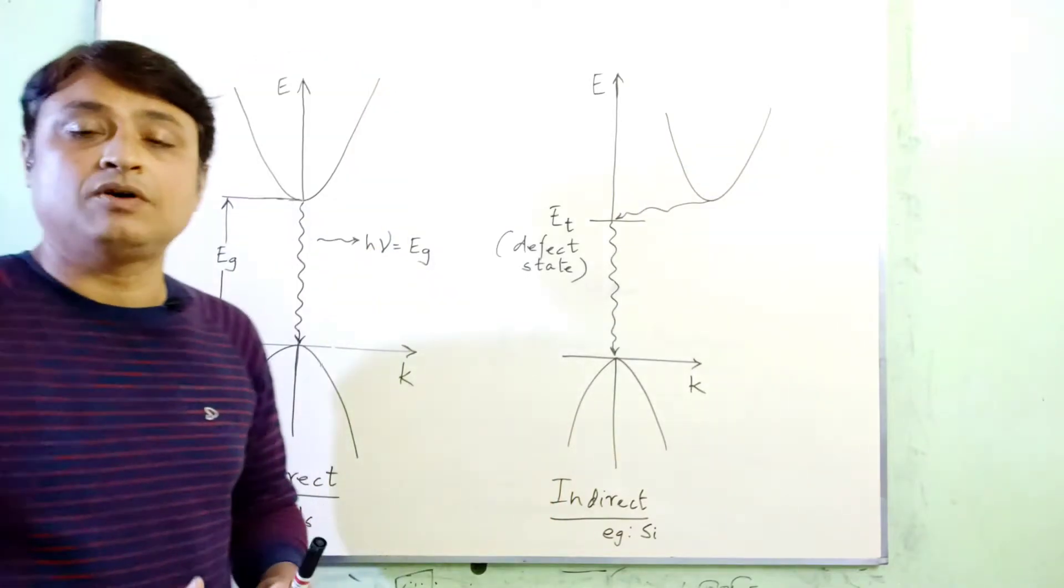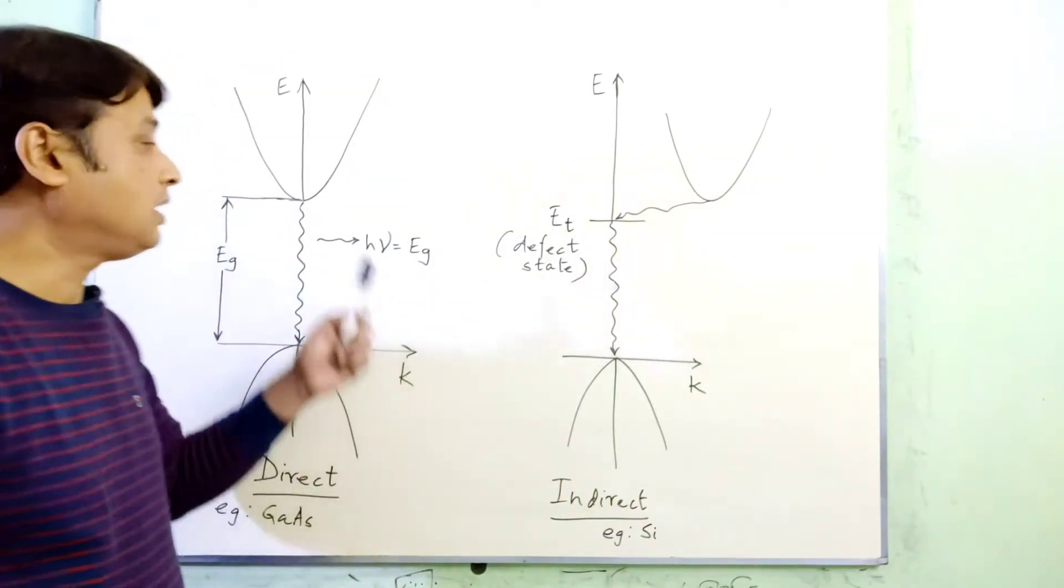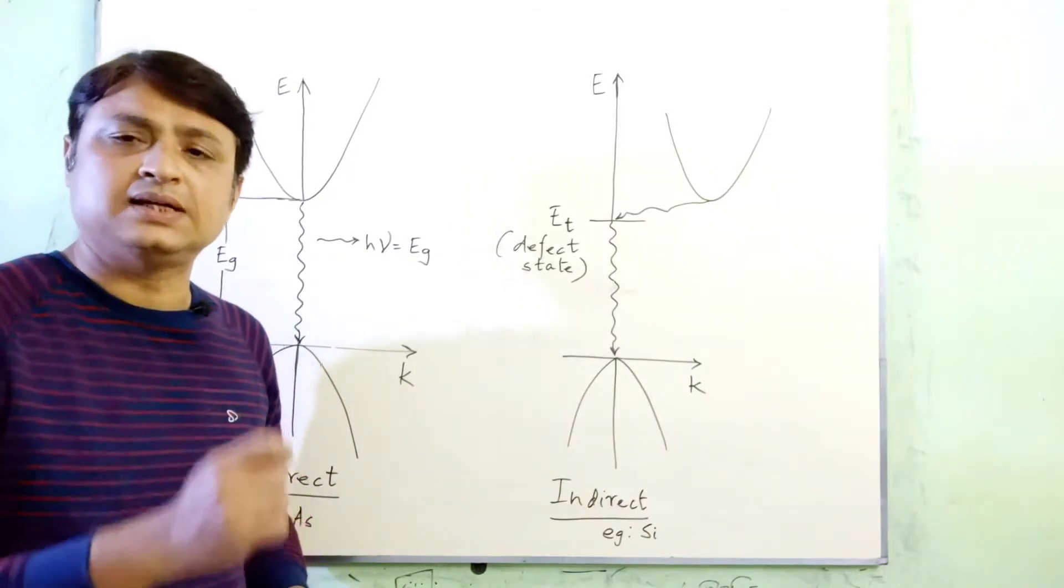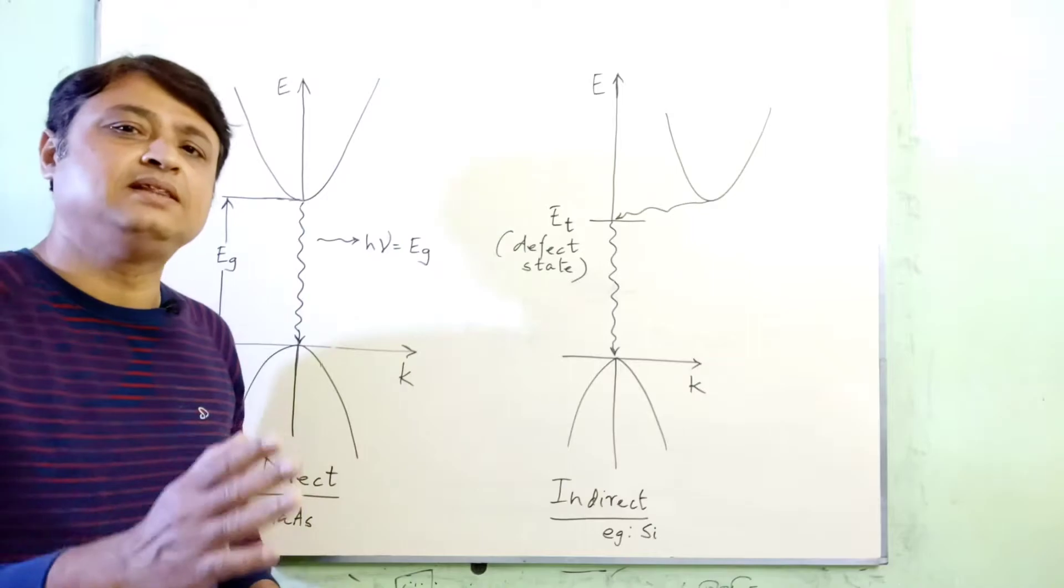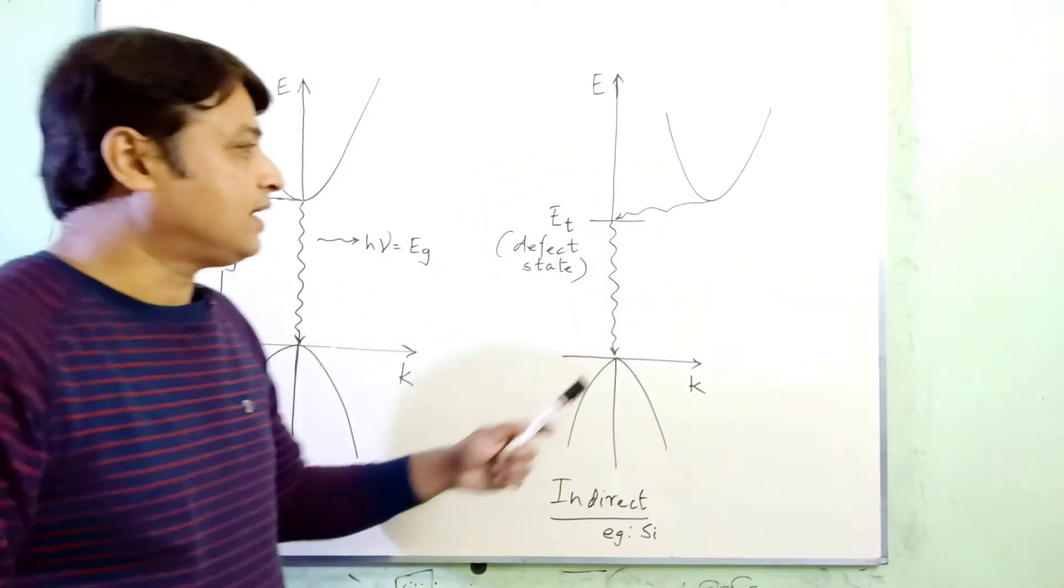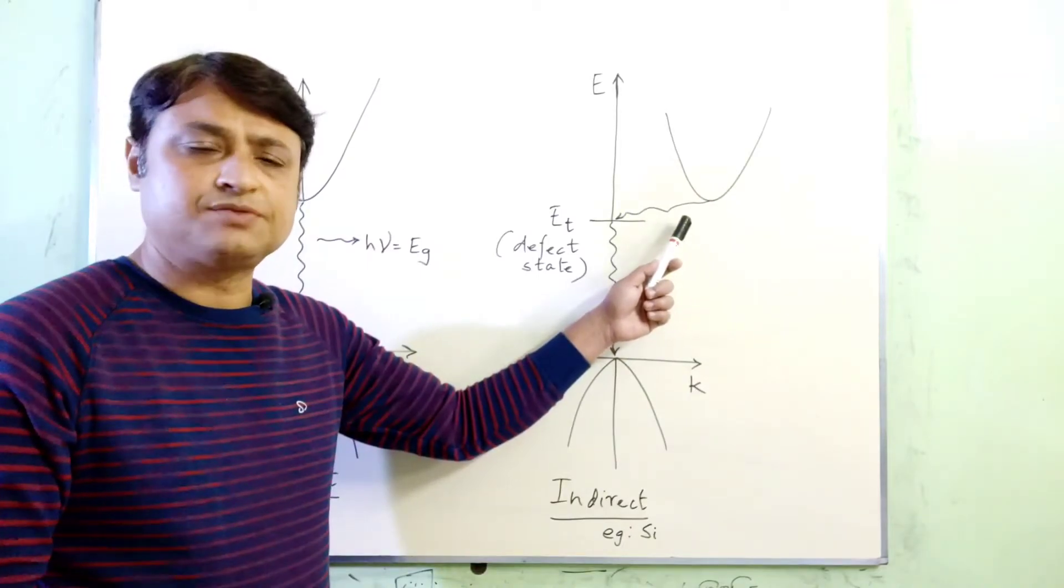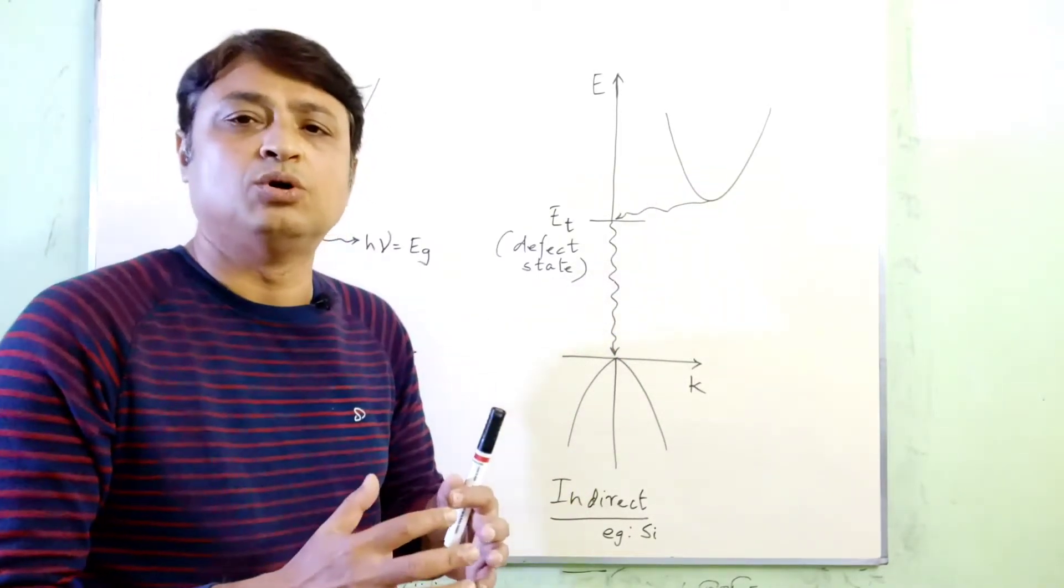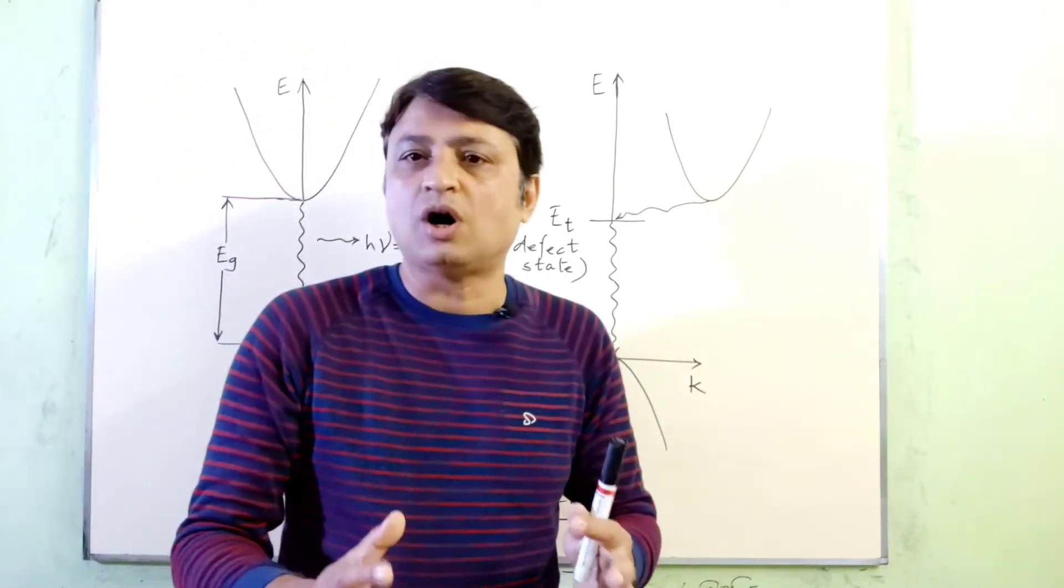Thus, an electron making a transition from the conduction band to the valence band in gallium arsenide requires no change in the value of K. But for silicon, when an electron transits from the conduction band to the valence band, it may undergo a change in the value of K.